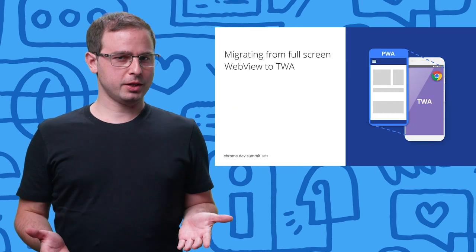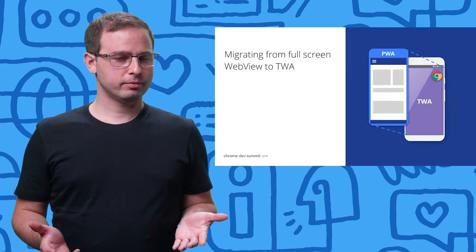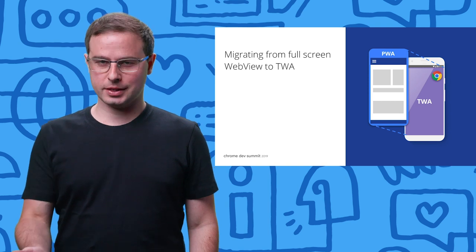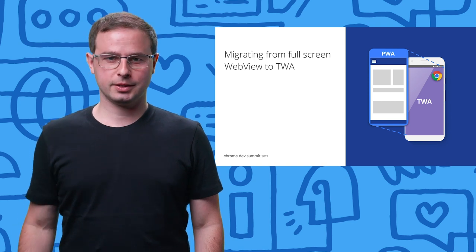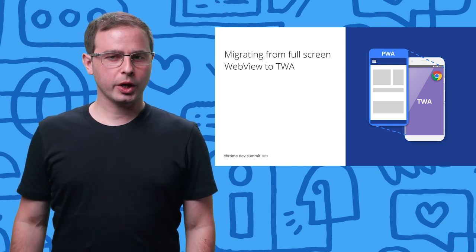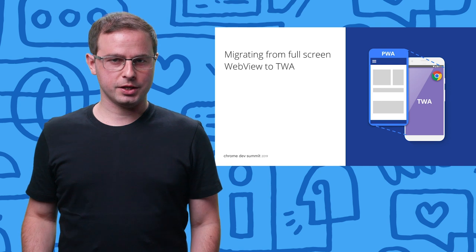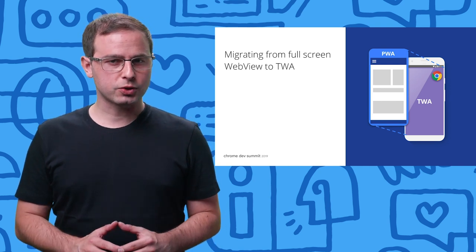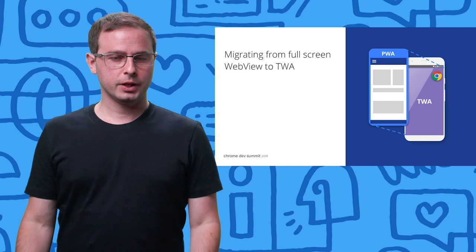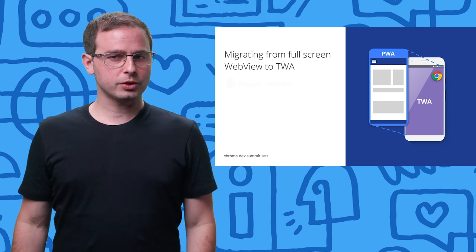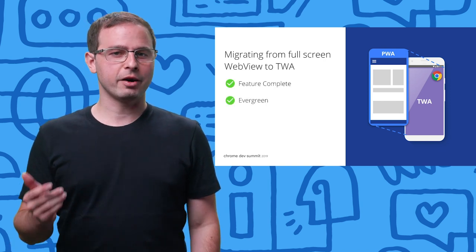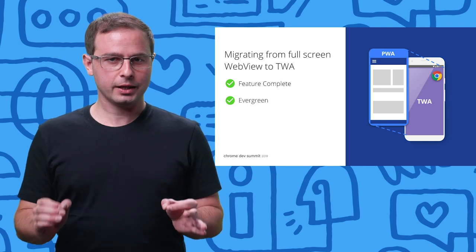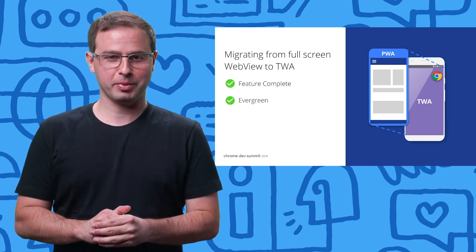If you want to have all the advantages of the web without the limitations of a web view, you should consider using trusted web activities. A TWA is not just a rendering engine like a web view — it's the full browser running in full screen mode. For that reason, it's feature complete and evergreen. This means that it's always up to date and will give you access to the latest web APIs.